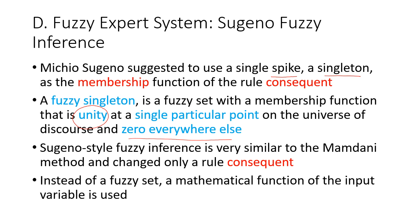Sugeno's style fuzzy inference is very similar to the Mamdani method, but it changes only the rule consequent. Instead of a fuzzy set, a mathematical function of the input variable is used. So the result of the inferencing, instead of having a fuzzy set, uses a mathematical function with a single output.